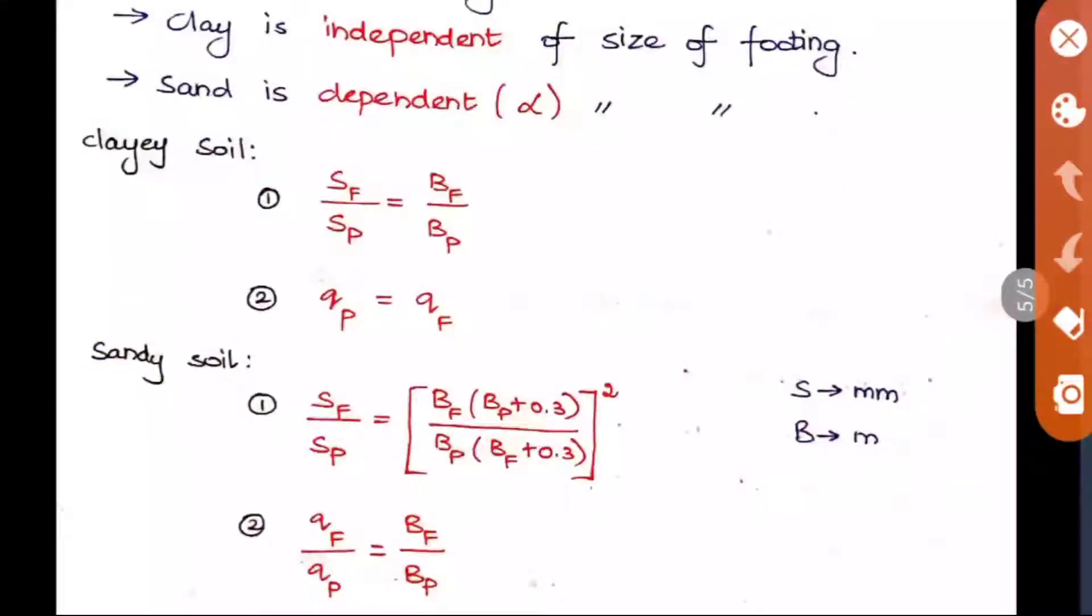Clay is independent of the size of the footing, but sand is dependent of the size of the footing. This is also important. Now we will see the formula. These both formulas are very very important because mostly they will be asking one question using this formula in all the objective type exams. Here it is the ratio of SF by SP. S means it is settlement, B means it is width, Q means it is pressure.